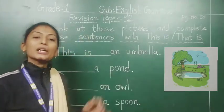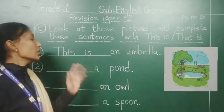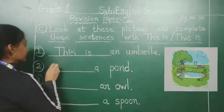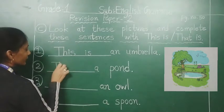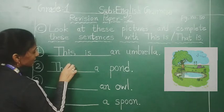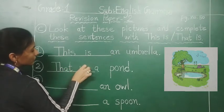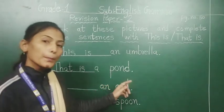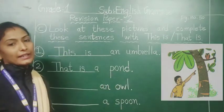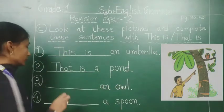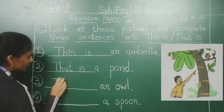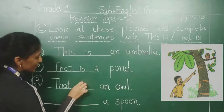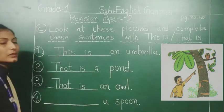Look at this picture — that is a pond, so we will write here: That is. That is a pond. And that is an owl.